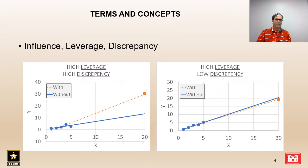Data can have influence when it has leverage or a discrepancy. In the plot on the left we can see an example where there is both leverage and a discrepancy. The orange square has high leverage because it has a strong influence on the fit of the curve, and a high discrepancy because it is significantly different from the trend in the rest of the data. You can see the difference between the blue line and the orange line fit with and without this additional data point.